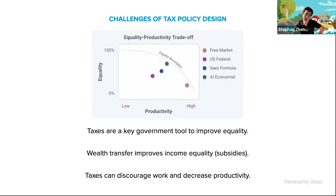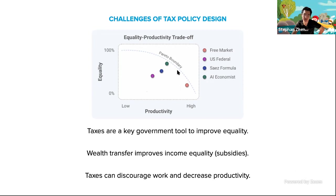This is actually a very hard optimization problem. You can use taxes to transfer wealth from the rich to the poor, but if you do that too much, taxes can discourage work and decrease overall productivity. If you plot equality and productivity in a two-dimensional plot, there's a Pareto boundary beyond which you cannot improve one without hurting the other. In this work, we look at four different ways of setting taxes to get as close as possible to the Pareto boundary, and hopefully control the point on that boundary we end up with.